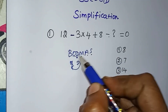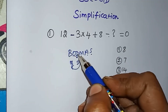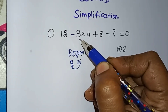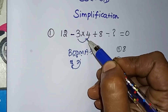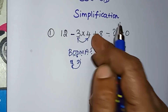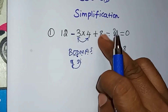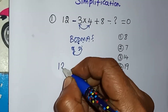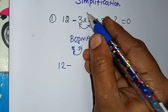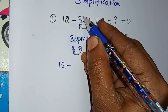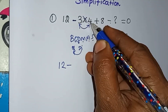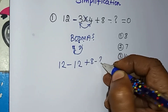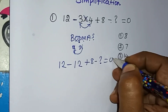What do we do here? In the first place, there is no bracket, 'Of', or division. So first, the multiplication depends on the two numbers. First, we have the first priority of multiplication. So 3 and 4 multiply: 3 × 4 = 12, plus 8, minus question mark, equal to 0.